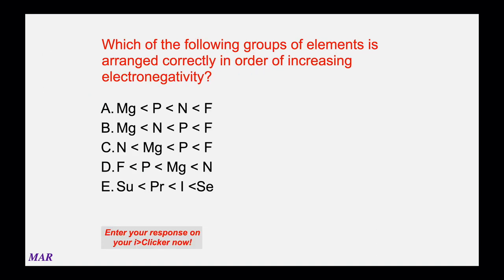Which of the following groups of elements is arranged correctly in order of increasing electronegativity? Electronegativity, developed by Linus Pauling, helps identify which atoms pull electrons more. The atom of lowest electronegativity always goes in the middle of a Lewis structure. Pause the video, find the correct answer, and then unpause it to hear the explanation.